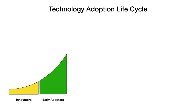Next we have the early adopters. These are the folks that we might consider the visionaries — they're the ones that can see how this technology could be applied to solve problems and make life better. They may also be people that have a problem so vexing that they're willing to try any new technology to see if they can solve it.